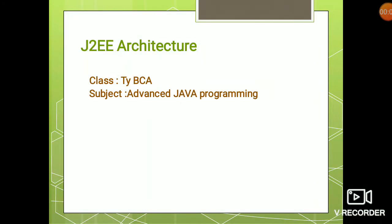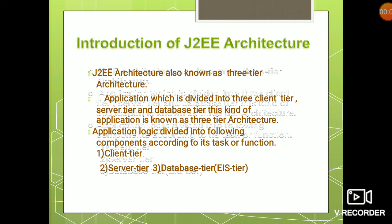Hello students, today's topic is Java 2 Enterprise Edition architecture. The J2EE architecture is divided into three main tiers: the client tier, server tier, and database tier.